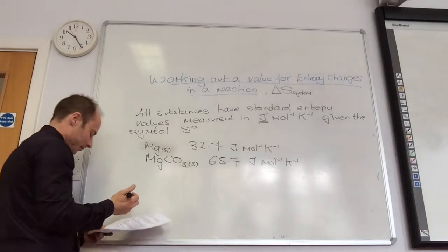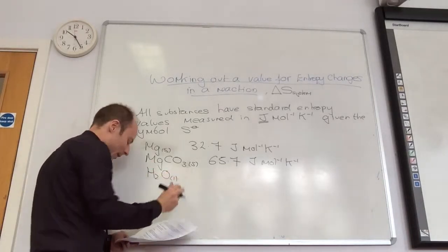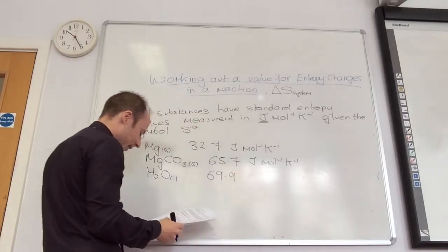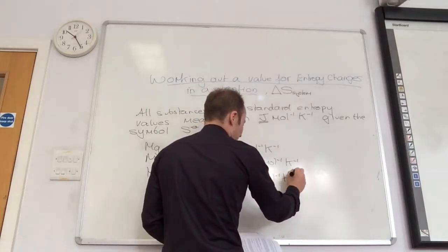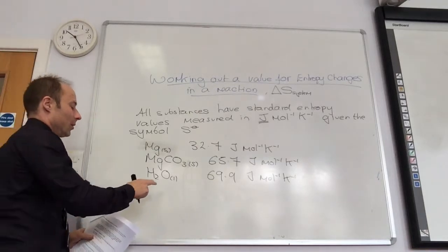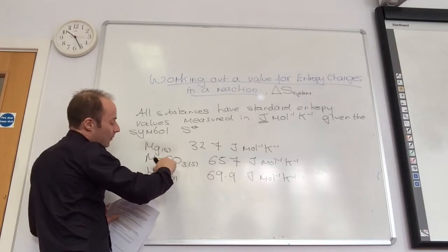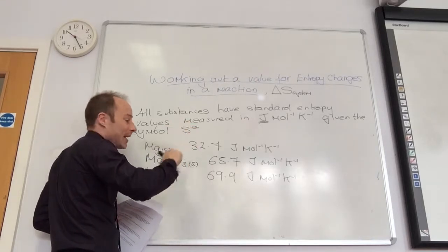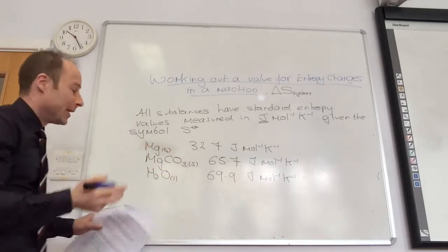Liquids: H2O as a liquid — liquid's going to be higher, and it is: 69.9 joules per mole per kelvin. Why is a bigger solid higher? Because magnesium is just magnesium atoms all aligned together, whereas magnesium carbonate has magnesium, carbon, and three oxygens — so it's more disordered.